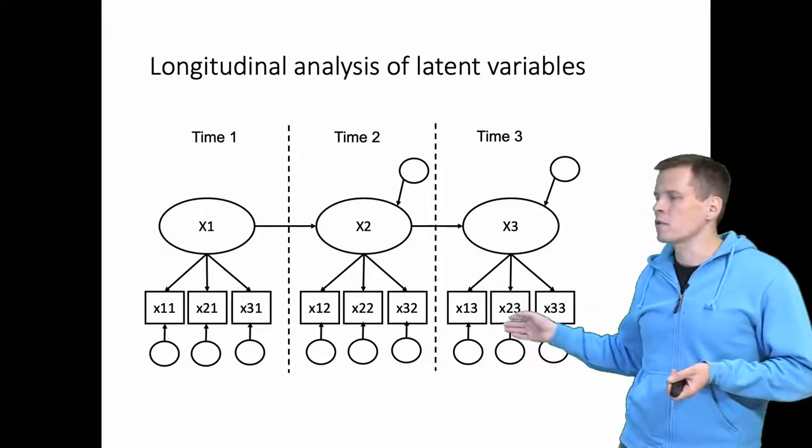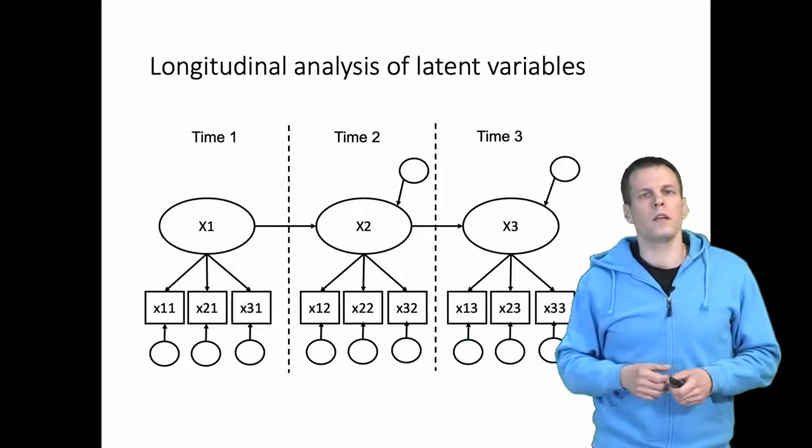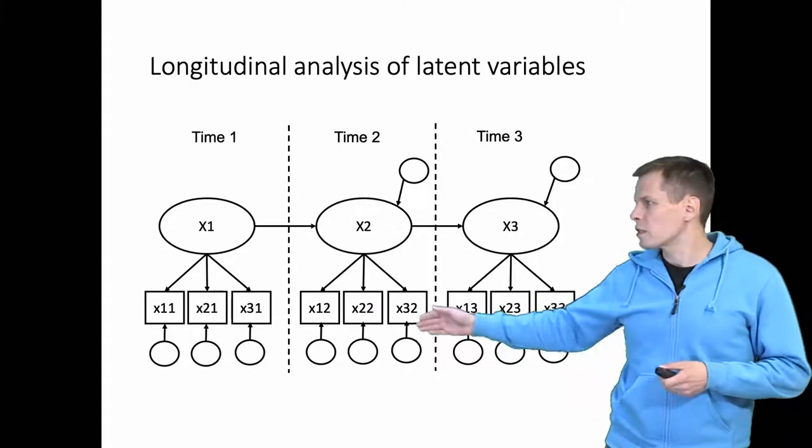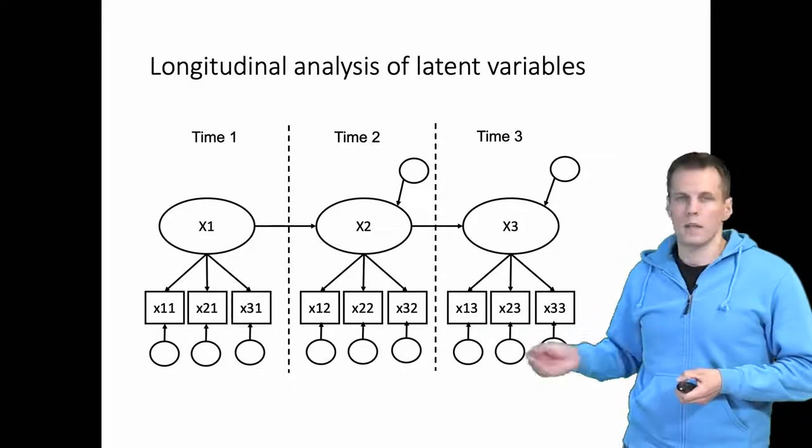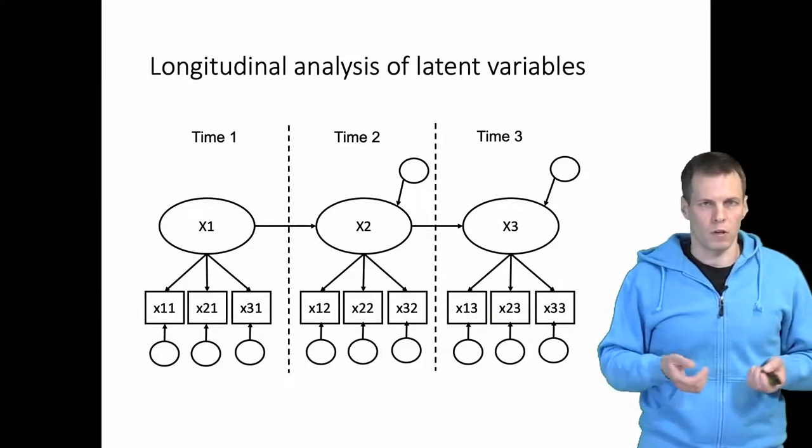And we have three indicators. x1,1 is the first indicator measured at the first time point, x1,2 is the same indicator measured at the second time point, and x1,3 is the same indicator measured at the third time point.